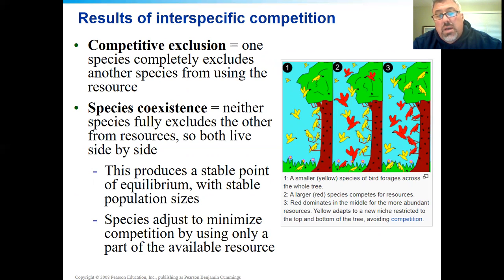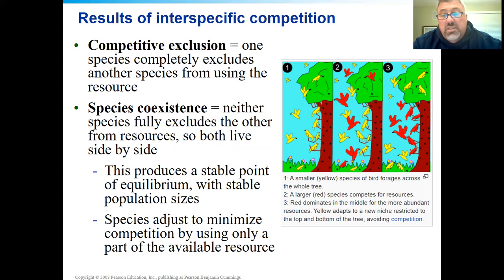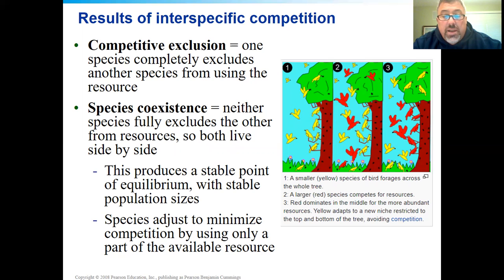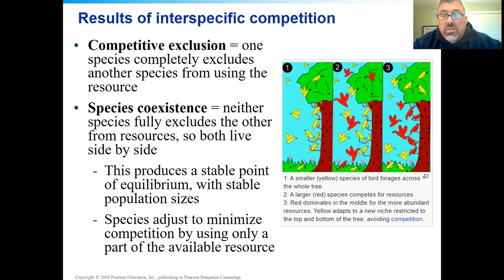In this diagram, the yellow bird is doing quite well — able to use and utilize resources all over the tree. Then in comes the red bird, which could be an invasive species or one that has migrated to an area. The red bird, being a bigger bird, is dominating and outcompeting the yellow bird. So the yellow bird has to get out of the way — one is excluding the other from the resource.